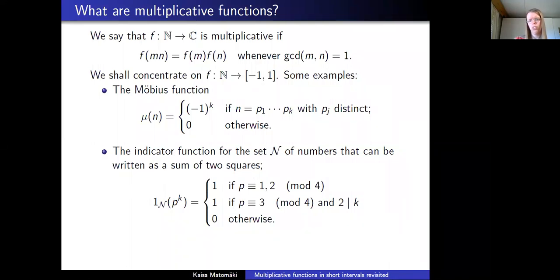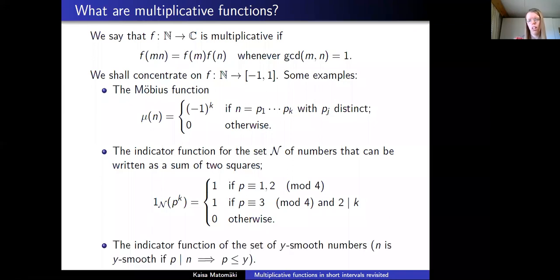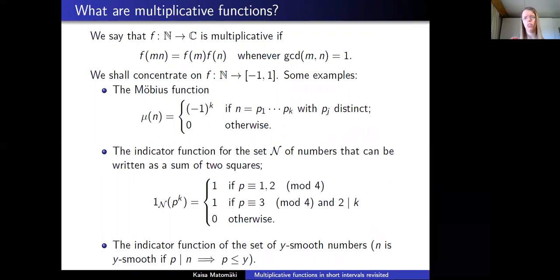It's zero if n has an odd power of a prime that is three mod four. A third example of a multiplicative function taking bounded values is the indicator function of the set of y-smooth numbers — a number whose all prime factors are up to y. These are three fundamental examples of multiplicative functions, and if one also looks at unbounded functions, the divisor function is an example.